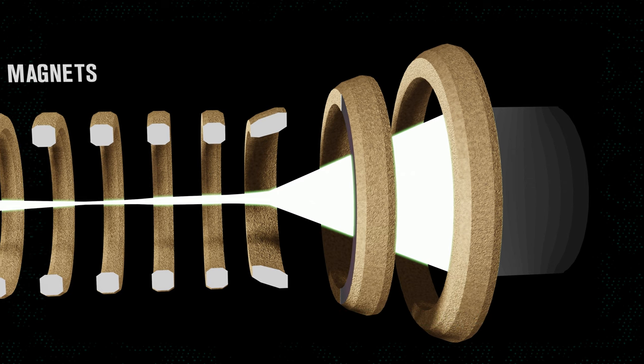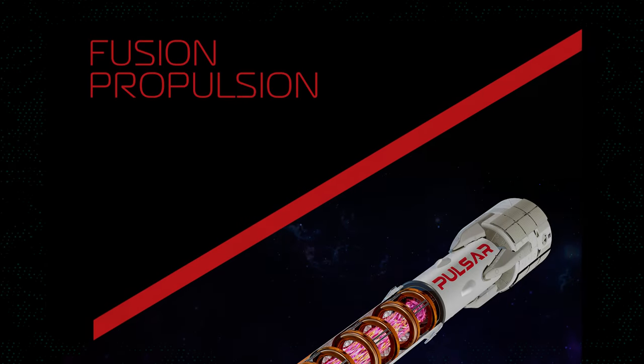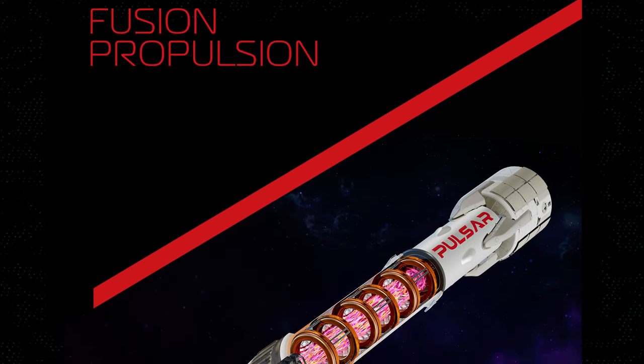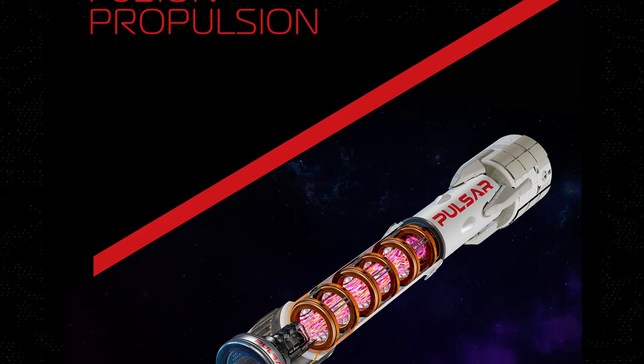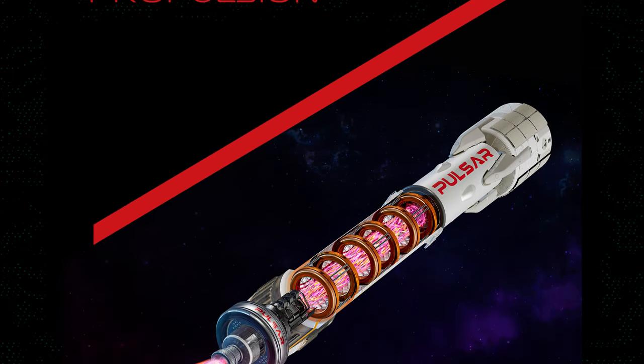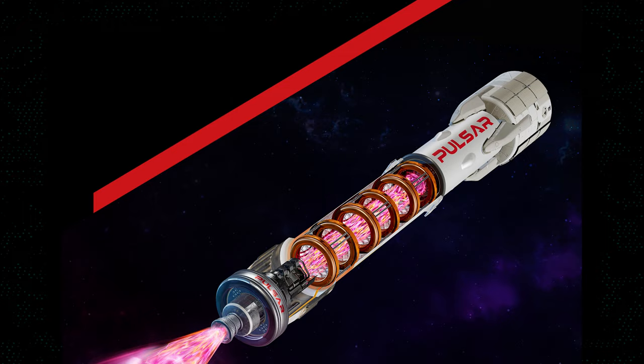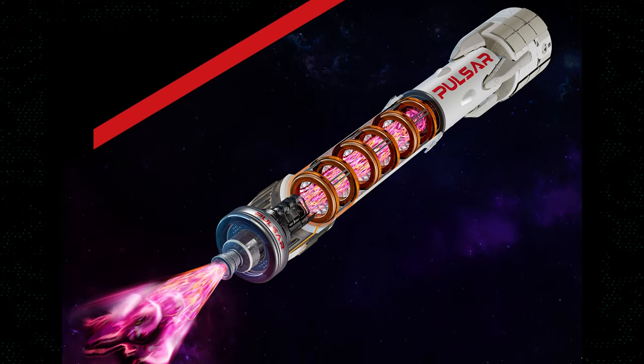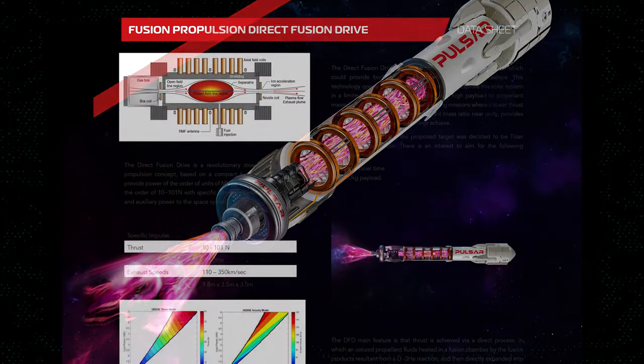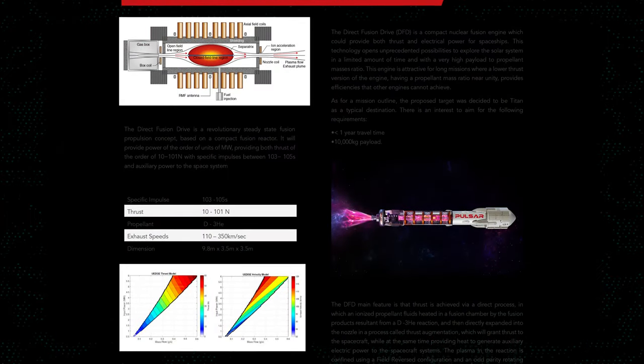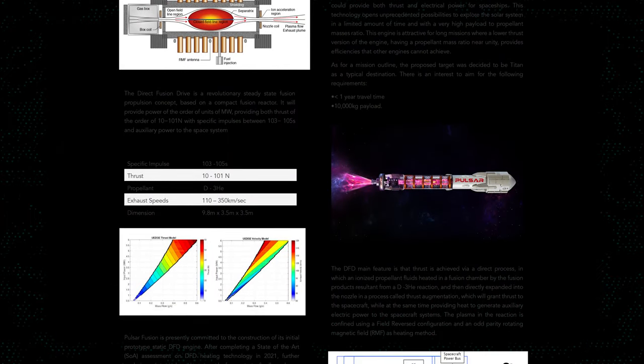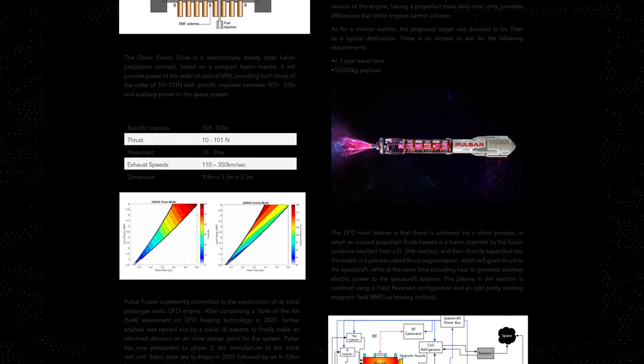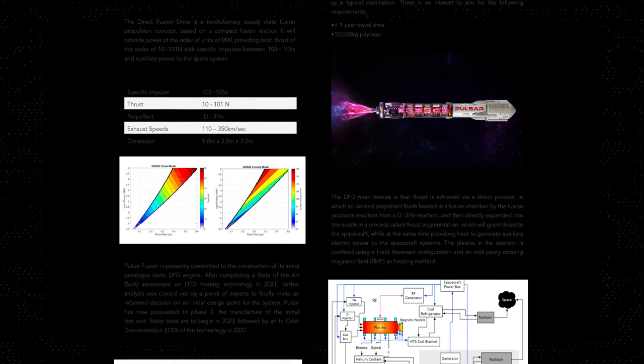Based in the UK and founded in 2011, the company Pulsar Fusion has developed commercial Hall Effect ion thrusters, and most recently began work in 2022 on a fusion drive system they hope to test in orbit once funding is secured. Pulsar Fusion seeks to use deuterium-helium-3 fusion, which produces protons and helium instead of neutrons. This is known as an aneutronic mode of fusion.